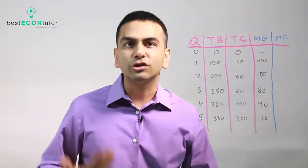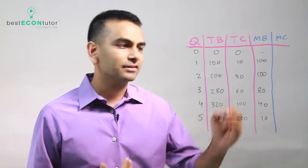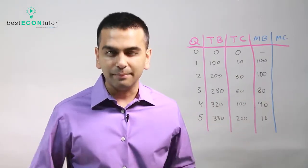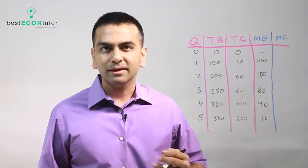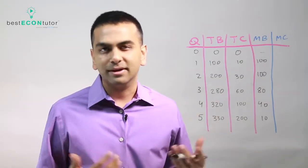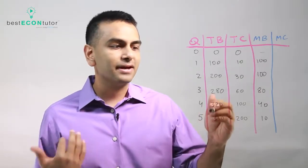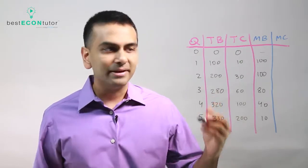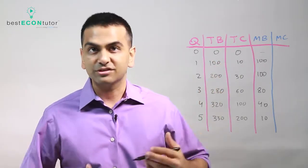So these are your marginal benefits for each extra house. Notice it typically goes down because the more of something you do, the less the next value adds, right? Going from the fourth house to the fifth house didn't give you as much more excitement as going from the first to the second house did.